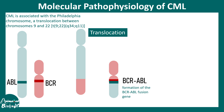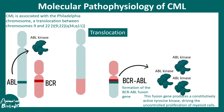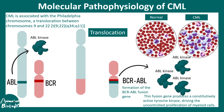The BCR gene is highly active, which is why normally ABL leads to production of ABL kinase — a kinase that regulates cell cycle, cell division, and cell proliferation. But in the BCR-ABL fusion construct, there is far too much ABL kinase production, much more than the normal level, leading to overproliferation and uncontrolled proliferation of white blood cells.